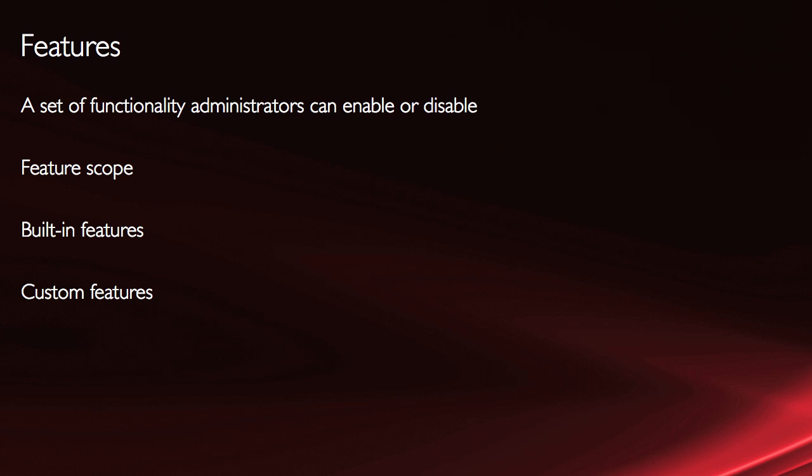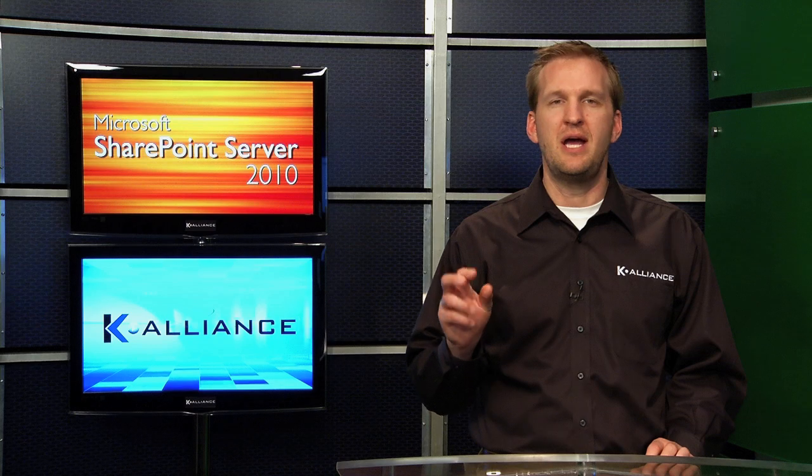So first, features. A feature is a set of functionality that administrators can enable or disable. It has a scope, meaning it's applied to a certain range or scope of your SharePoint environment. There are some built-in features, and you can of course build custom features. Within central administration, you can see a list of all features and activate or deactivate them. But first, you need to get them actually implemented into the environment.